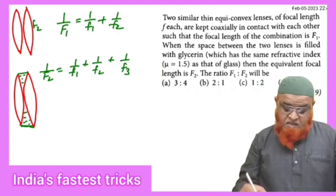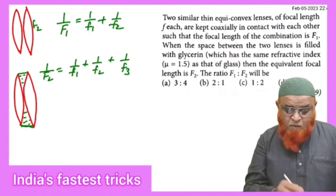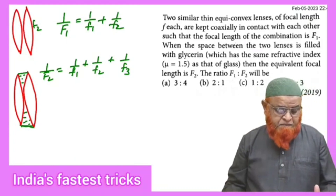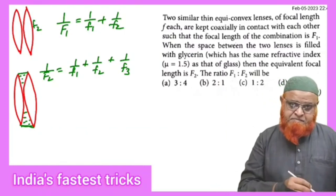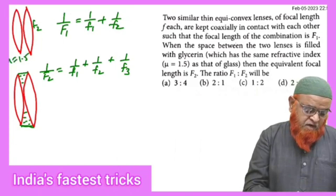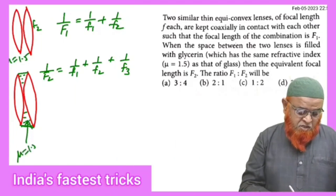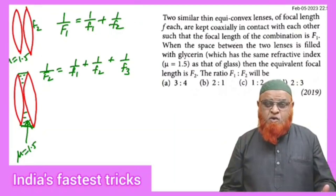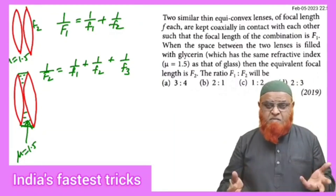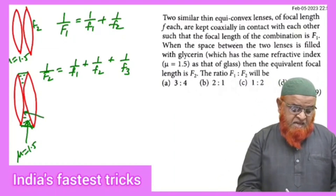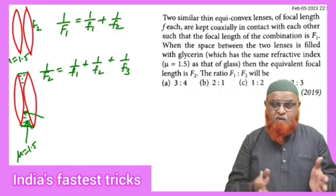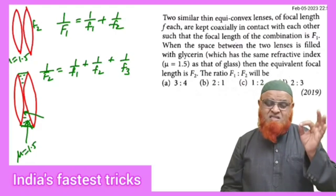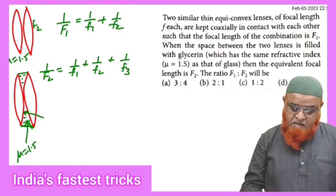Consider two equiconvex lenses having focal lengths F1 and F2. The resultant focal length satisfies 1/F = 1/F1 + 1/F2. In the second case, glycerin is placed between the two convex lenses. The refractive index is 1.5 for both lenses and the glycerin. The shape of the glycerin layer is just like a concave lens, so its focal length is negative.